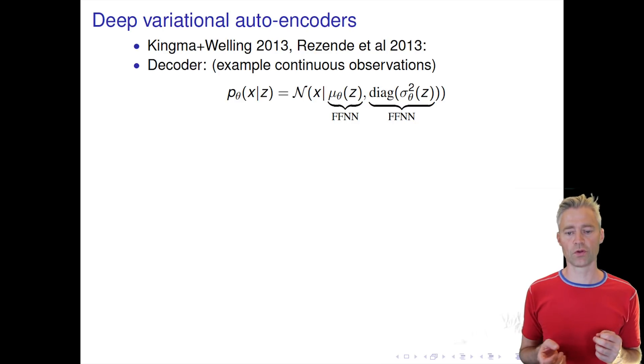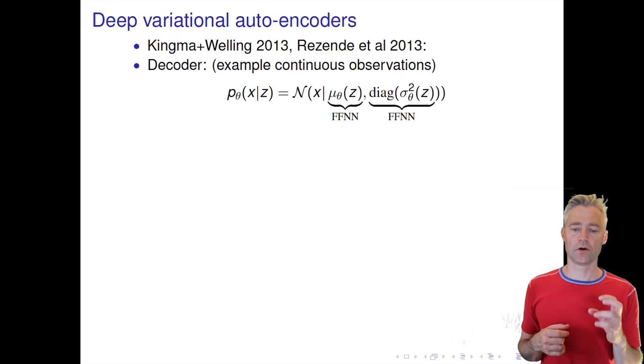We can model this with a Gaussian distribution, and we use neural networks with some shared weights to describe the mean and variance of this distribution. This will depend on the specific value of the latent variable.